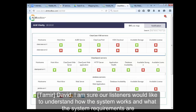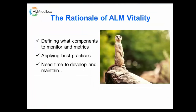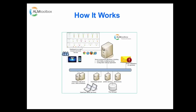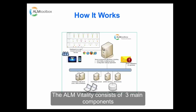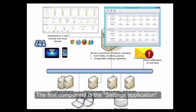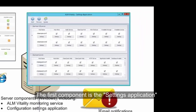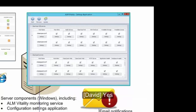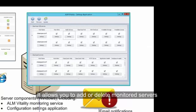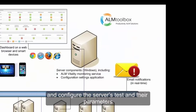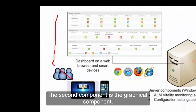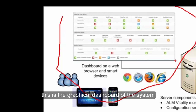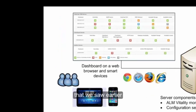David, I'm sure our listeners would like to understand how the system works and what the system requirements are. ALM Vitality consists of three main components. The first component is the settings application — the configuration tool for ALM Vitality. It allows you to add or delete monitored servers and configure the server's tests and their parameters. The second component is the graphical component — the graphical dashboard of the system that we saw earlier.